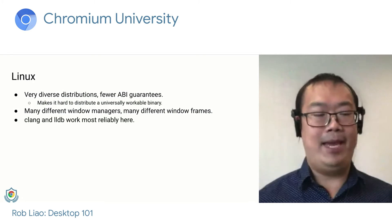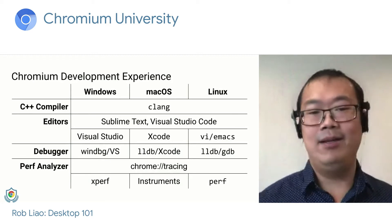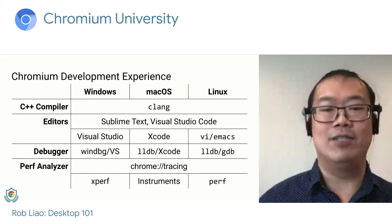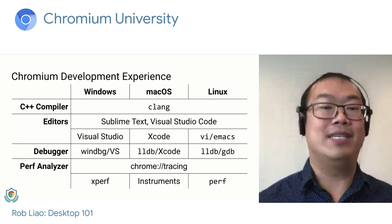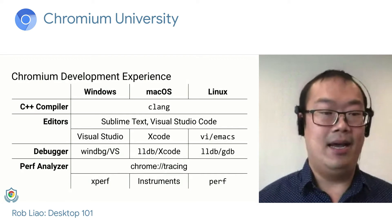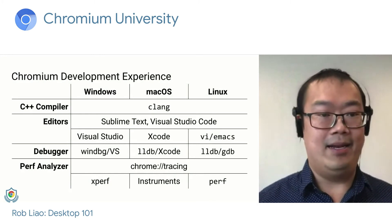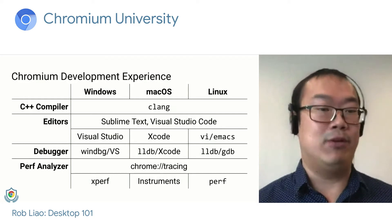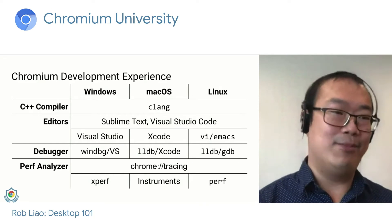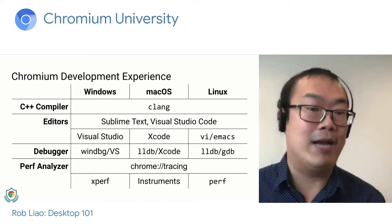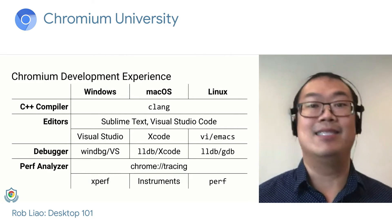With those as the main platforms we support, our development experience looks something like this. We have a common C++ compiler, a variety of editors — some cross-platform like Sublime Text and Visual Studio Code, and some targeted to their individual platform. The debugger toolchains are also targeted per platform. For performance analysis, we have Chrome tracing for our own instrumented code, the Windows Performance Toolkit with ETW for Windows, and we find that if something is a cross-platform issue, we can often do the analysis on Windows and get the same result much more easily.